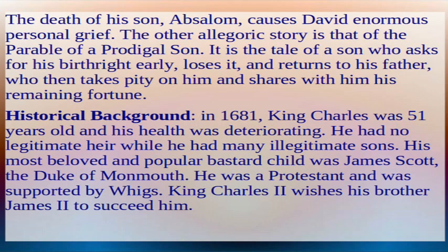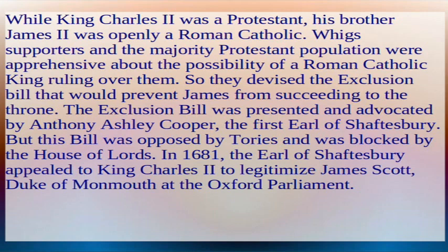Historical Background: In 1681, King Charles was 51 years old and his health was deteriorating. He had no legitimate heir, while he had many illegitimate sons. His most beloved and popular illegitimate child was James Scott, the Duke of Monmouth, a Protestant supported by the Whigs. King Charles II wished his brother James II to succeed him, but while Charles II was a Protestant, James II was openly a Roman Catholic. Whig supporters and the majority Protestant population were apprehensive about a Roman Catholic king, so they devised the Exclusion Bill to prevent James from succeeding to the throne. The Exclusion Bill was presented and advocated by Anthony Ashley Cooper, the first Earl of Shaftesbury, but was opposed by Tories and blocked by the House of Lords.